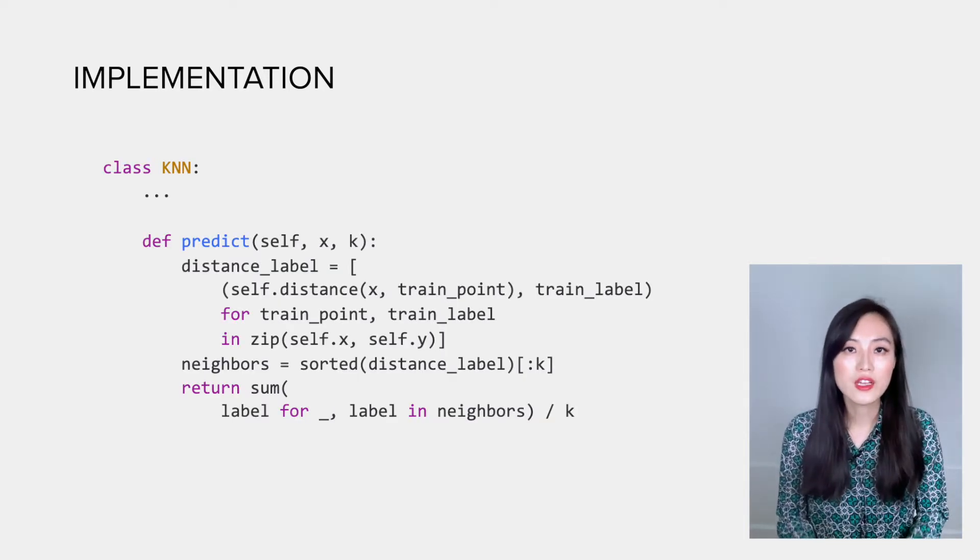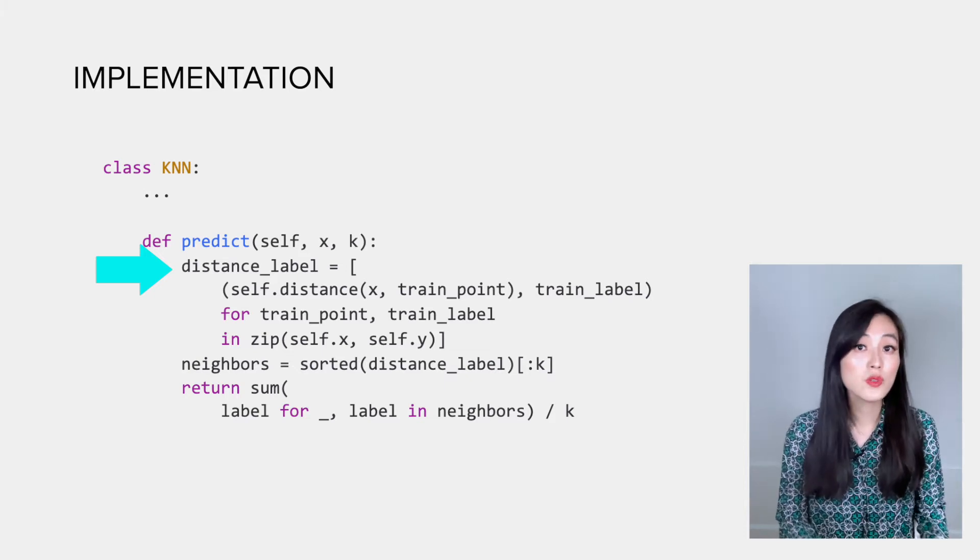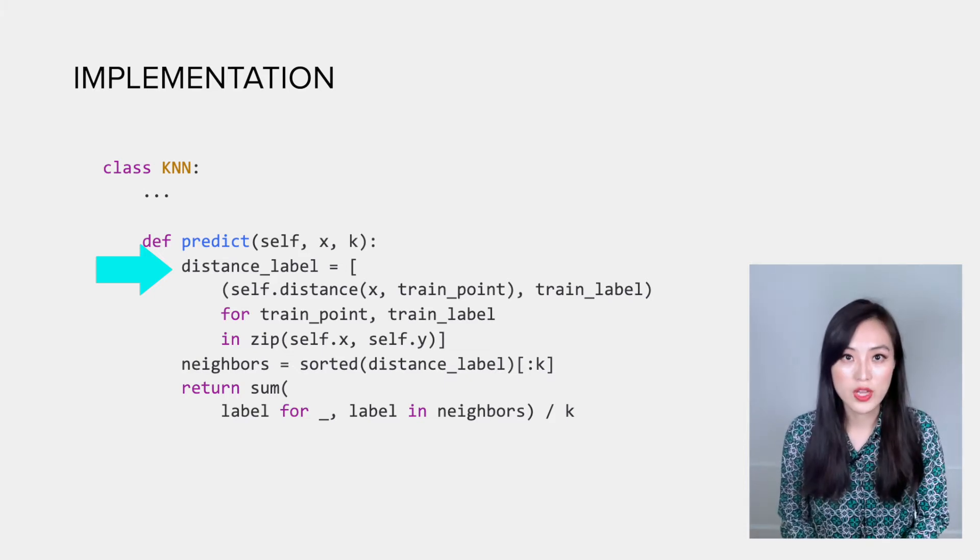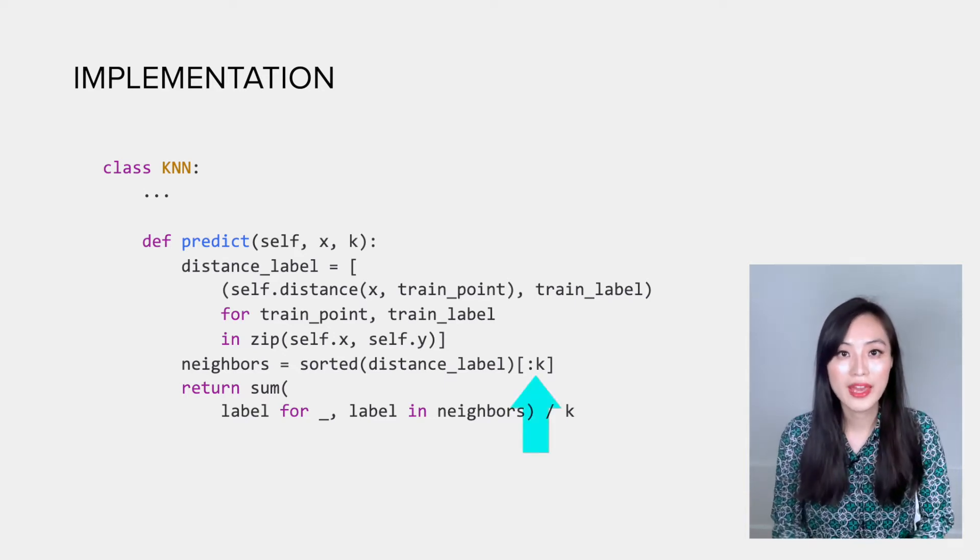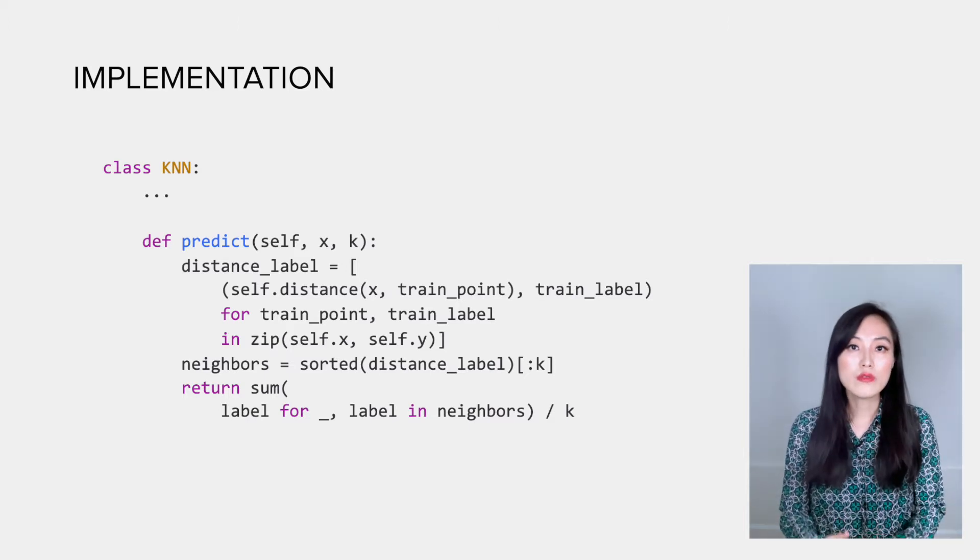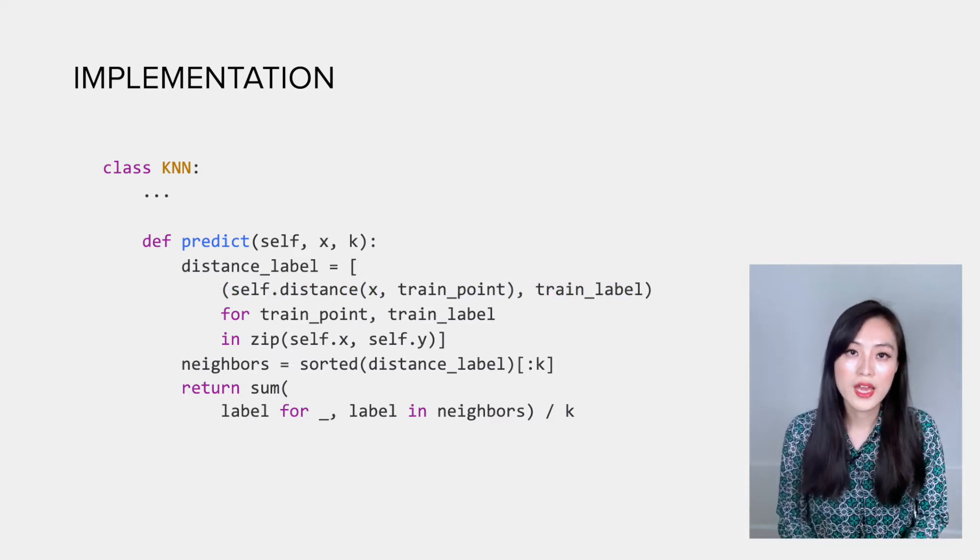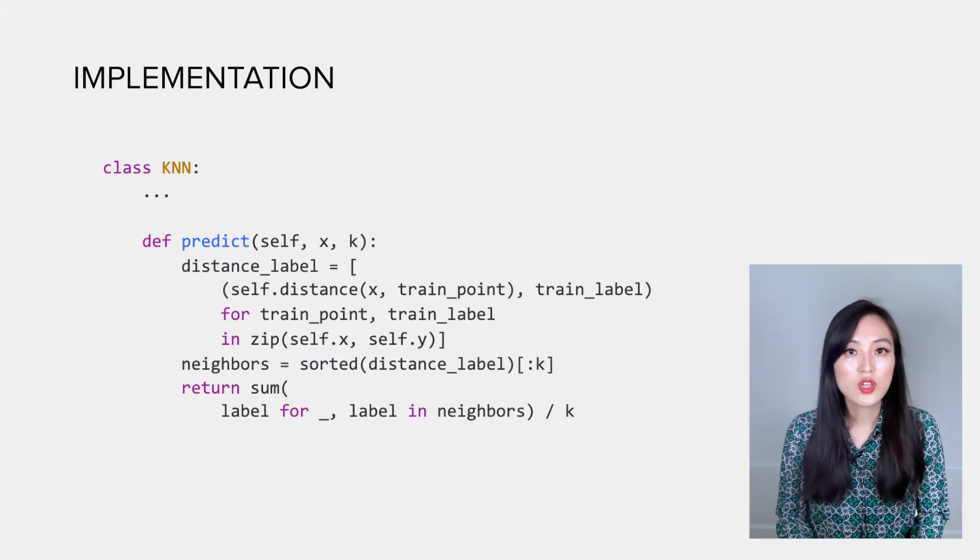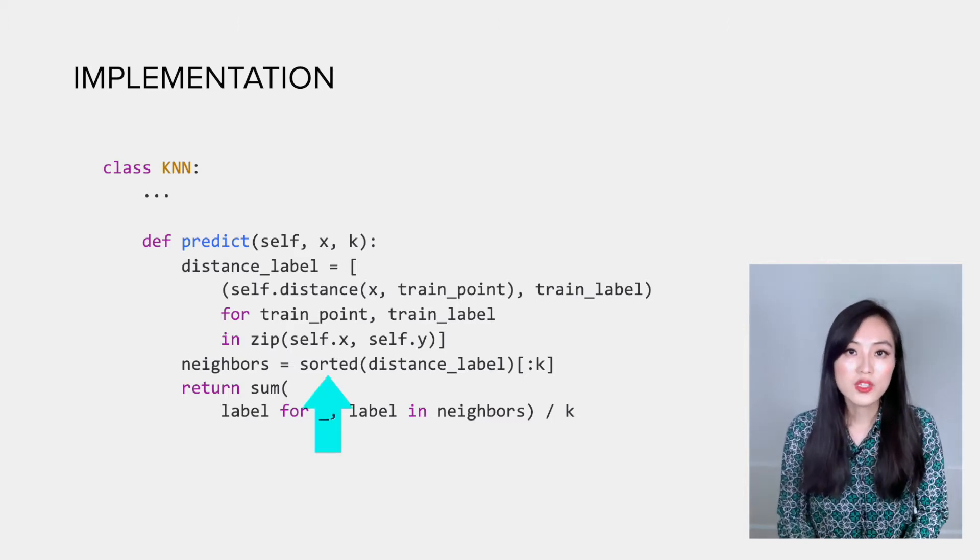To find the k closest neighbors, the idea is to first get the distance from the new data point to all the training data points and sort them in ascending order based on the distance. Then we just need to select the top k. Here we use tuples to store the distance and observed label y so that we could easily sort a list of tuples in ascending order based on the distance, and we use the built-in sorted function in Python to do the sorting.